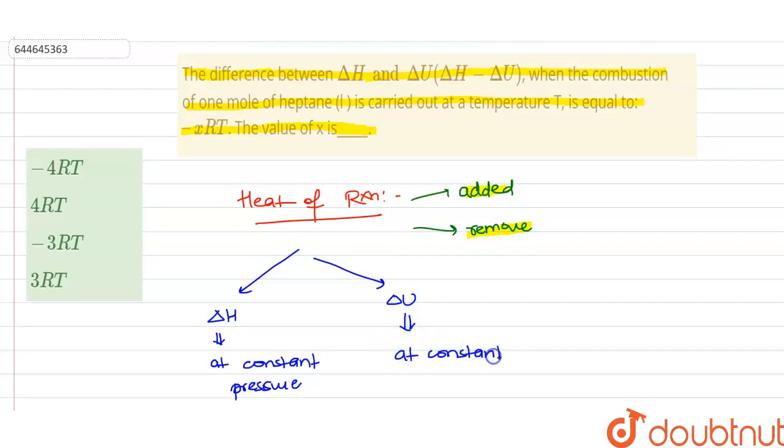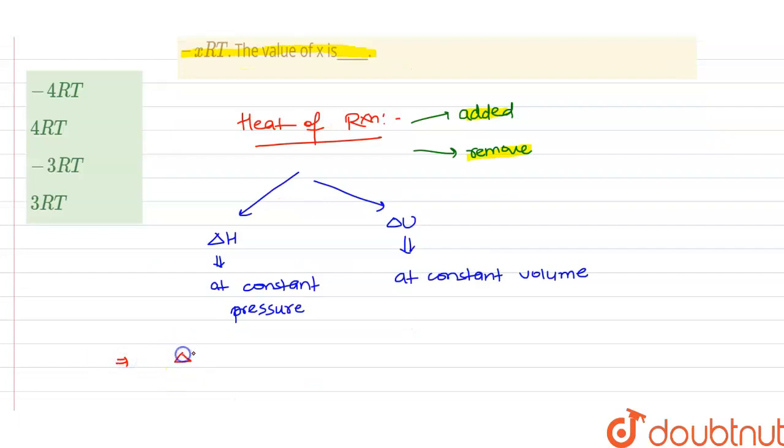Now there is a formula which tells about the relation between delta H and delta U. That is delta H is equal to delta U plus delta ng RT, where R is the universal gas constant, T is the temperature in Kelvin, and delta ng is defined as follows.